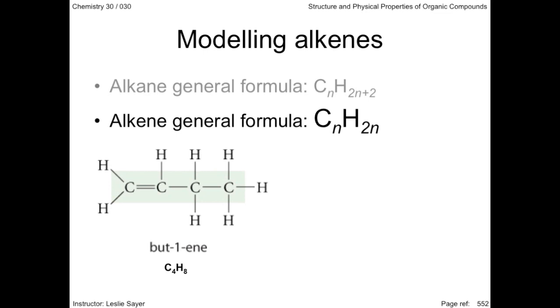But-1-ene shows the double bond is between carbons 1 and 2, the same molecule if the double bond was between carbons 3 and 4. But-2-ene shows the double bond is between carbons 2 and 3, a different compound—a structural isomer. Keep adding carbons to the chain and the double bond combinations become greater.